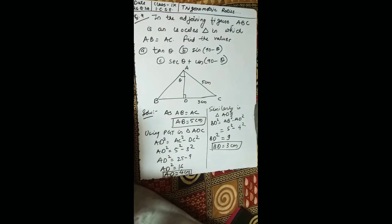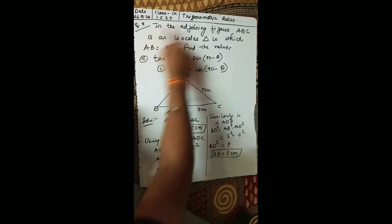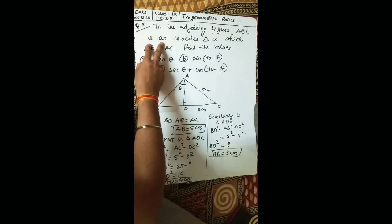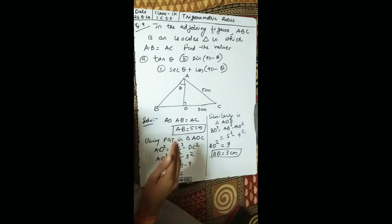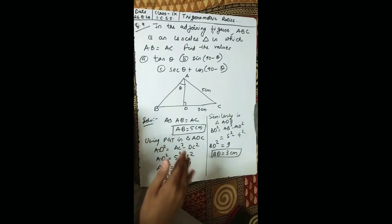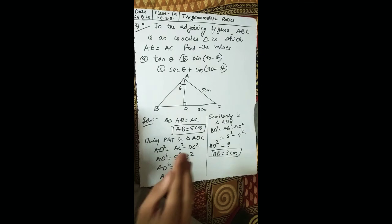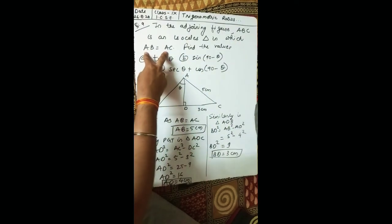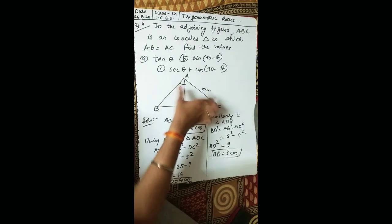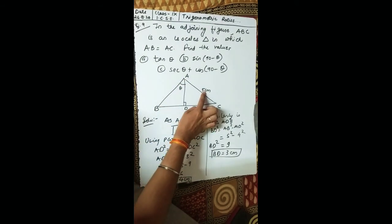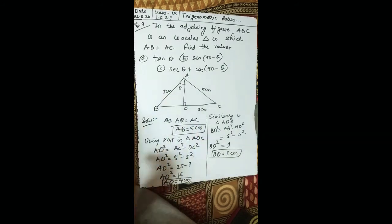Let's come to the ninth question. In the adjoining figure, triangle ABC is an isosceles triangle. We know the property: two sides of an isosceles triangle are equal. Here AB equals AC, so if AB is 5 centimeters, then AC is also 5 centimeters.